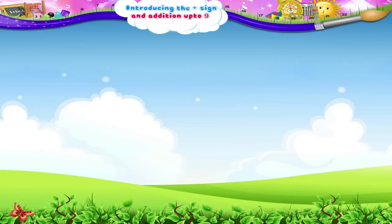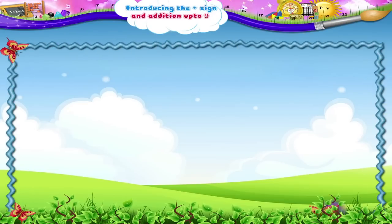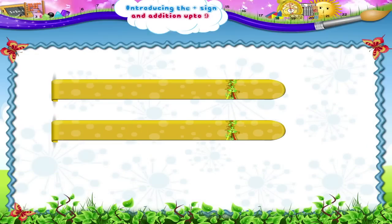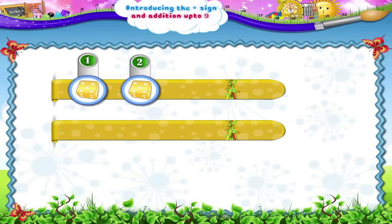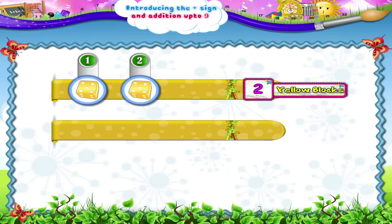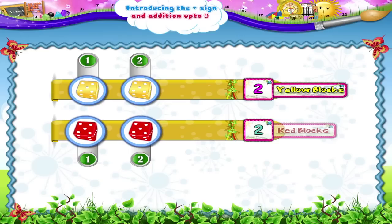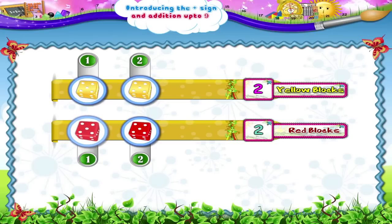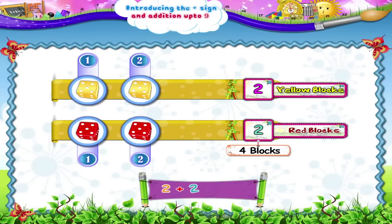Addition. Now, 1, 2 — 2 yellow blocks — and 1, 2 — 2 red blocks. Let us add them. We get 1, 2, 3, 4 blocks. 2 plus 2 gives us 4 blocks.